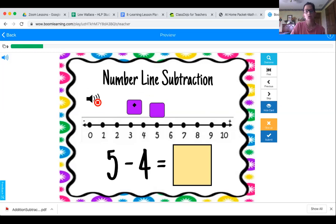So one, two, three, four. So I know that I stopped at this number, which is the number one. I know that's my answer. That's the answer to my equation. Five minus four is one.